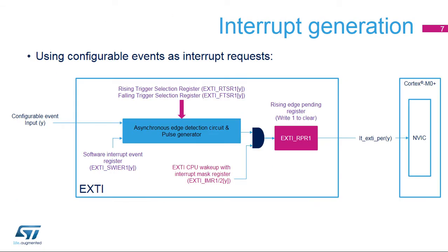This figure aims to explain the various stages enabling the conversion of a configurable event active edge into an interrupt request. The first stage is the asynchronous edge detection circuit configured by two registers, EXTI-RTSR1 and EXTI-FTSR1. Any edge, possibly both, can be chosen. The software can emulate a configurable event by setting the corresponding bit in the EXTI-SWIER register. The bit is auto-cleared by hardware. An AND gate is used to mask or enable the generation of the interrupt to the NVIC.